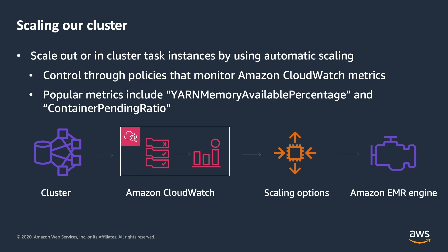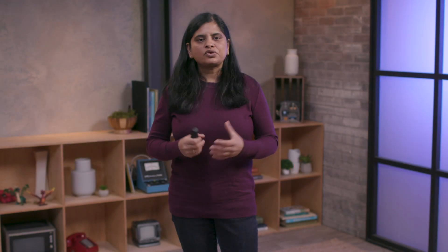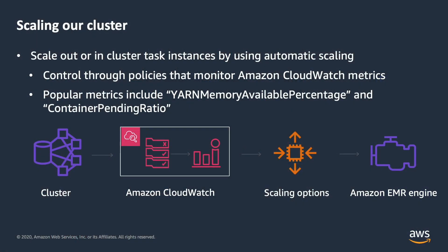To reduce cost, you can also scale an Amazon EMR cluster. Auto scaling is provided out of the box through Amazon EMR, and you can control scaling through policies monitored via CloudWatch metrics. Popular metrics that customers use to scale up or down are YARN available memory percentage as well as the container pending ratio.